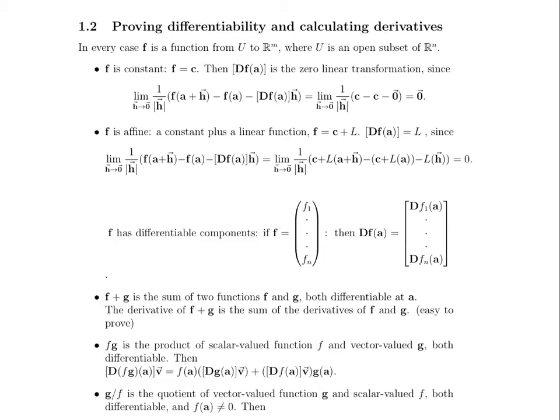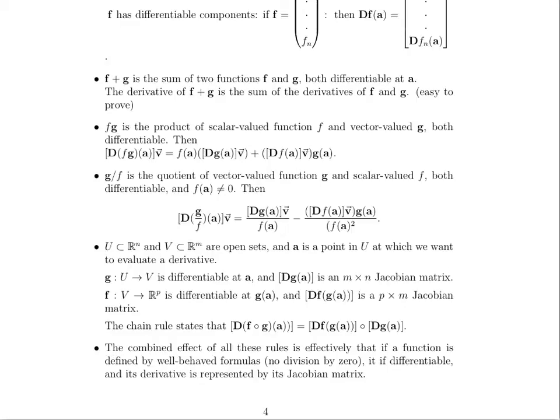If we have a product F times G, where F is a scalar valued function and G is a vector valued function, they're both differentiable, then what we end up with is the derivative of this function. F times G is equal to F of a times dG at a times v plus dF at a times v times G of a.